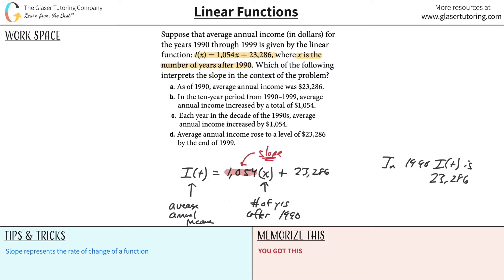Now we're looking for something that looks like that. Which of the following interprets the slope in the context of the problem? It says, as of 1990, the average annual income was $23,286. Well, that's actually true, but that might not be the answer because they're asking us for slope.